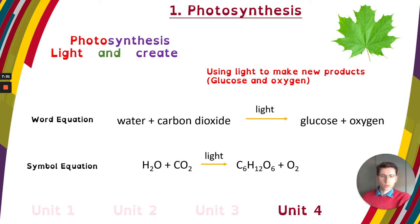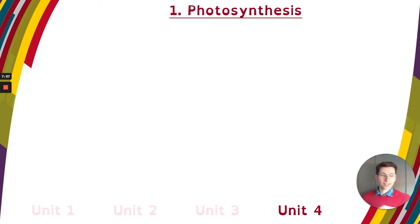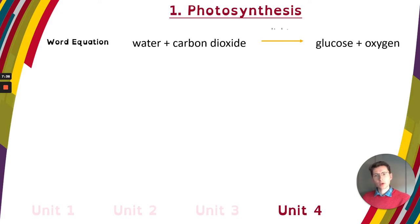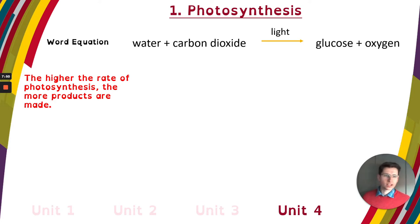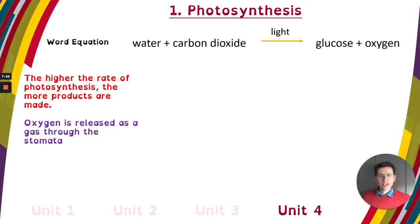So why is this important? The higher the rate of photosynthesis, the more products are made. If we have more photosynthesis — more carbon dioxide, water, and light — then we get more glucose and more oxygen. Oxygen is released as a gas and leaves through the stomata, which are on the underside of the leaf.